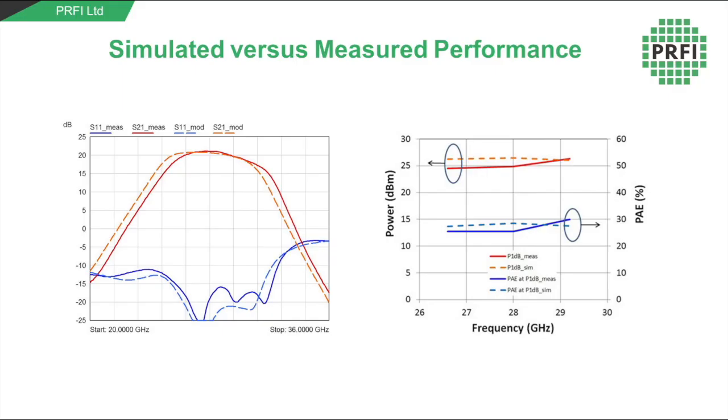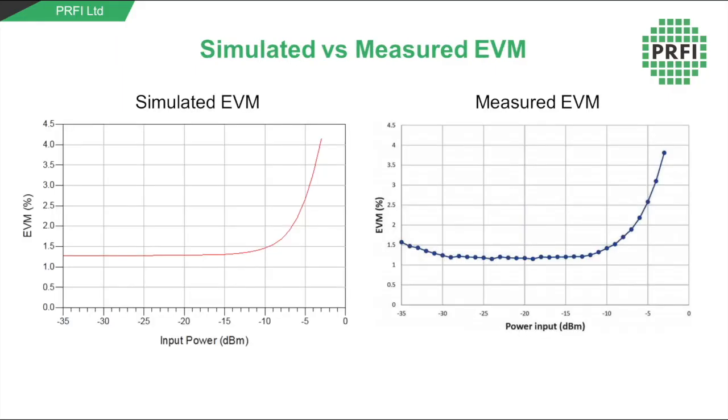If we now compare the ACLR simulations to some measured results we can see that the agreement is very good. The EVM at low powers is around 1.3% in both cases, rising to around 4% at higher input power levels. The slightly higher EVM we see at low power levels in the measured plot is due to the noise floor of the spectrum analyzer and is not due to the PA itself.